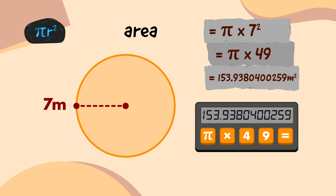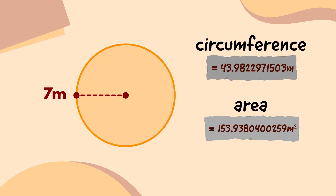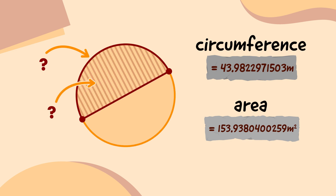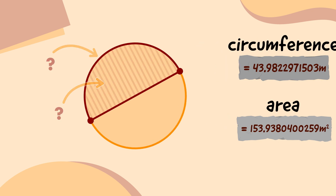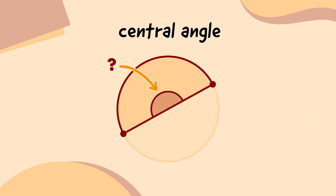Superb! Now that we know the full circle's circumference and area, we can work out the size of this arc length, and its sector's area. The next thing we need to do is calculate how much of the full circle this part is. It's time to measure that central angle.